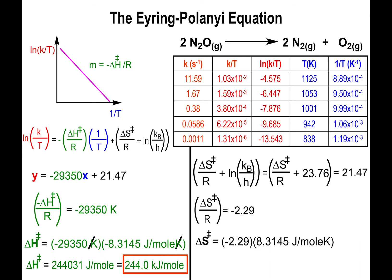We first subtract 23.76 from both sides and multiply by the gas constant 8.3145. This means the entropy of the transition state is negative 19 joules per mole kelvin.